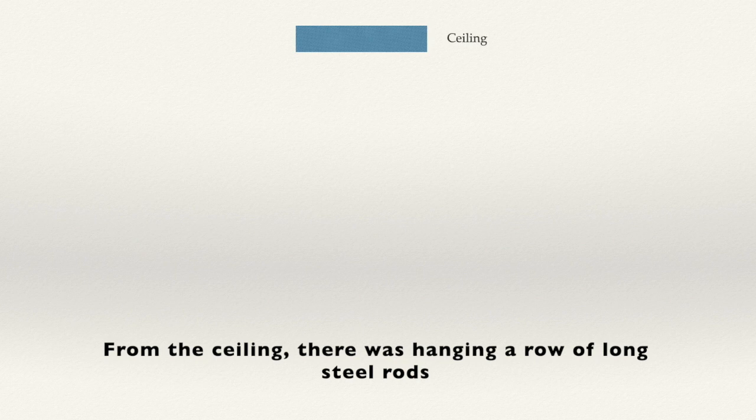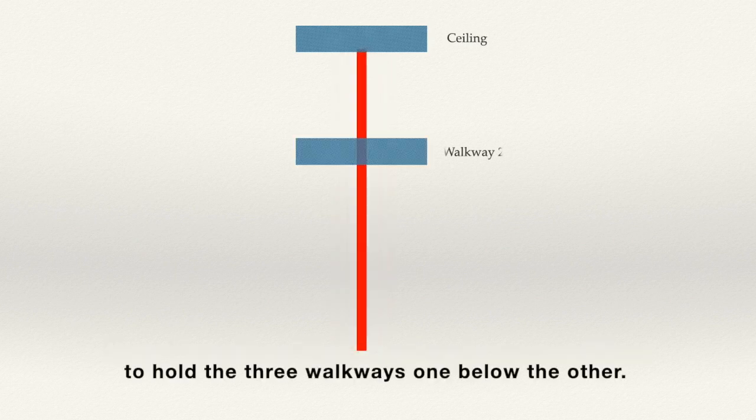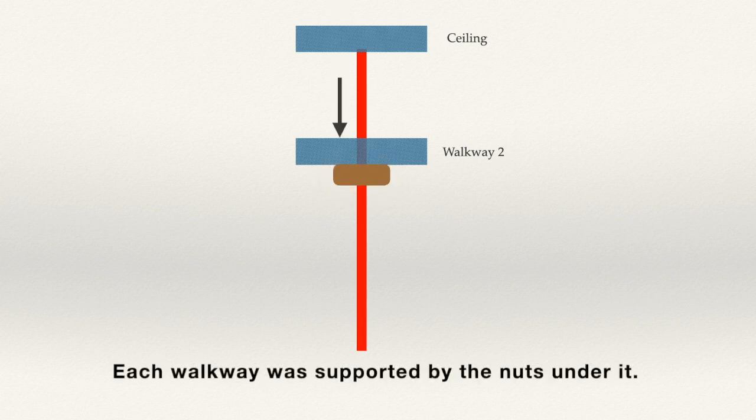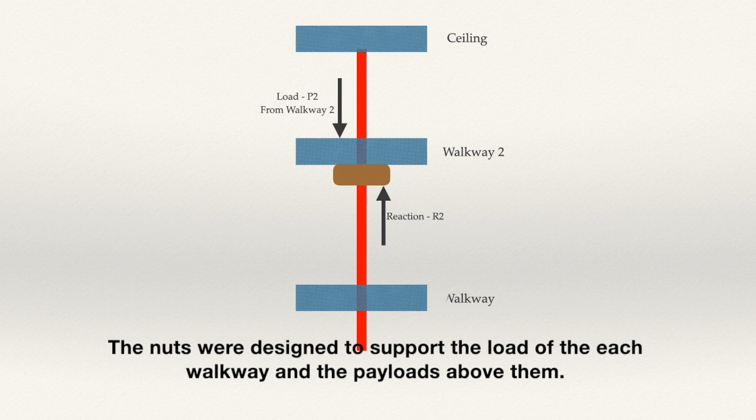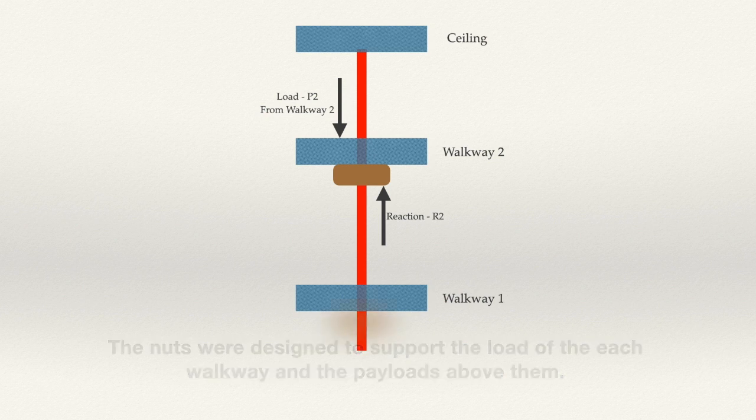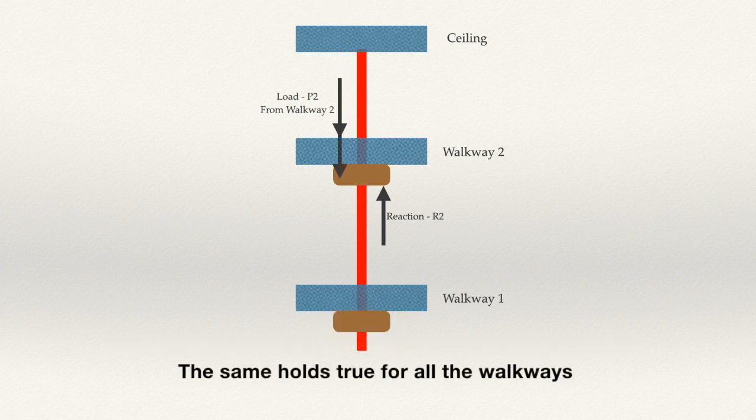From the ceiling there was hanging a row of long steel rods to hold the three walkways one below the other. Each walkway was supported by the nuts underneath. The nuts were designed to support the loads of each walkway and the payloads above them. The same holds true for all the walkways.